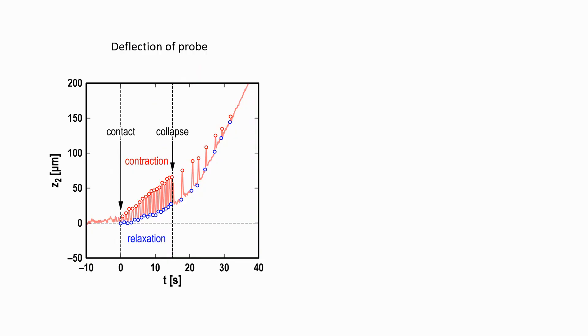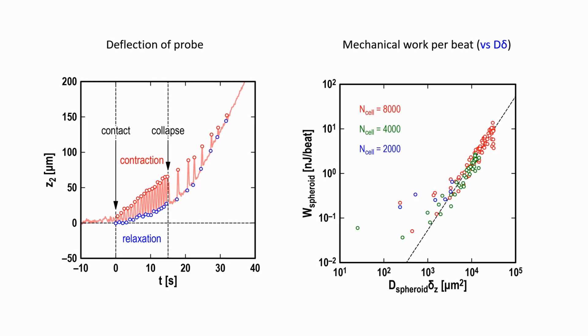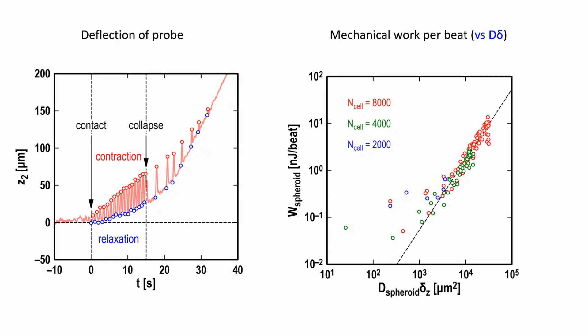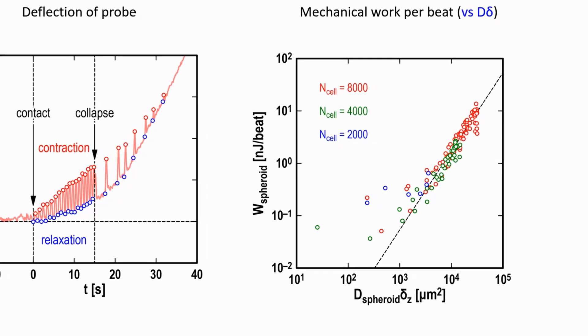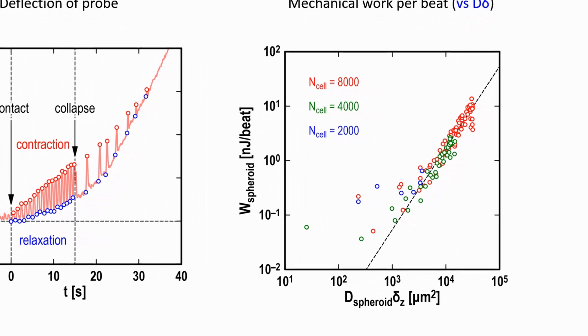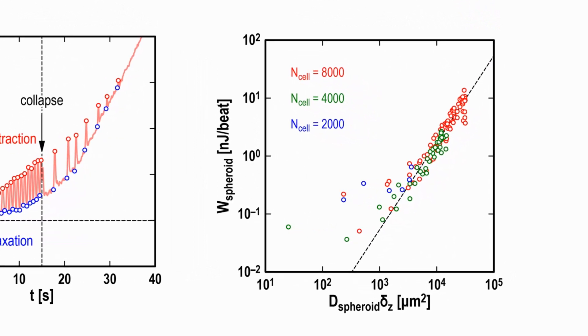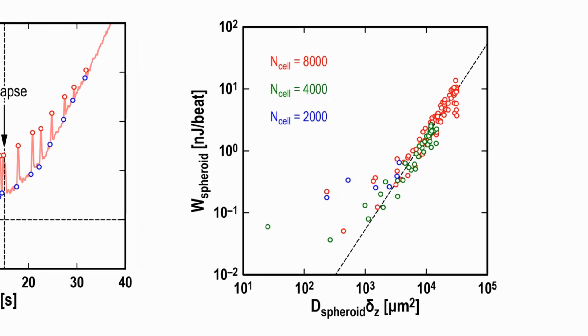Let us take again a closer look at the beating of one cluster. This graph shows the deflection of the probe due to contraction of the cardiac spheroid. With measured forces and displacements, one can calculate the mechanical work, which the cluster performs during one beat. In the right-hand side graph, this work is shown as function of cluster size multiplied with indentation depth, and it is found that the mechanical work is proportional to this combination to the power 1.5.